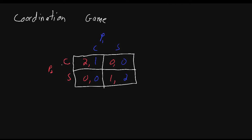Why is this called the meetup game? Both players would prefer to go to the same place. When they both go to the concert, they get positive payoffs, or when they both go to the sporting event, they get positive payoffs. If player two goes to the concert but player one goes to the sporting event, they go to different places and they both get zero payoff. The twist is that player two prefers they both go to the concert, because he gets two, whereas when they both go to the sporting event, player two only gets one. Player one is the opposite — he prefers they both go to the sporting event, getting two, but if they both go to the concert he'll still get one, just less happy than if they both went to the sporting event.